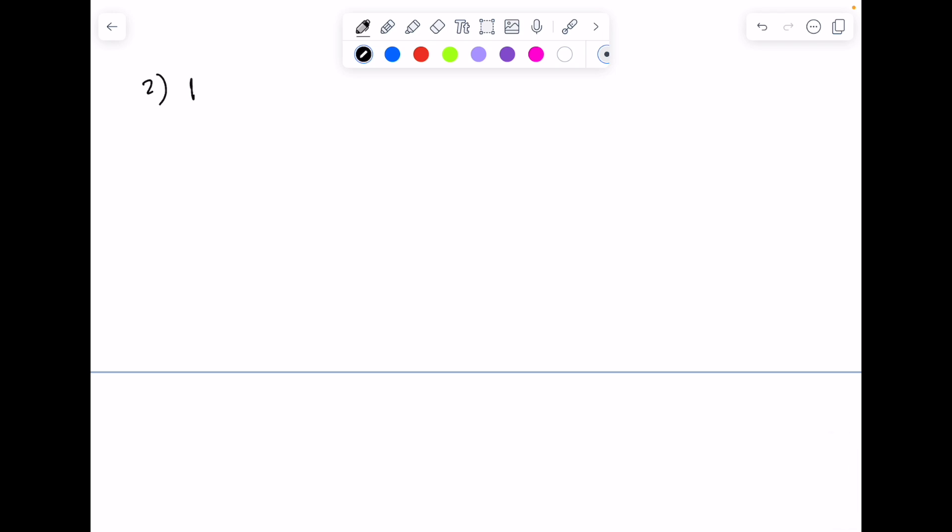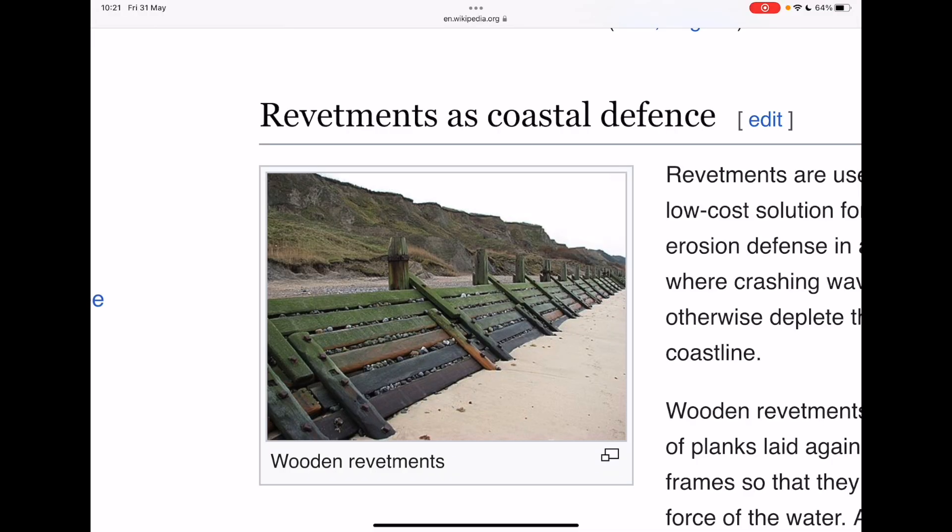Next up, revetments. So now I'm going to Wikipedia and we're looking at revetments. These are sloping structures built on embankments or shorelines along the base of the cliff, and again they will absorb wave energy and reduce erosion. But I think we can agree they're pretty aesthetically unappealing.